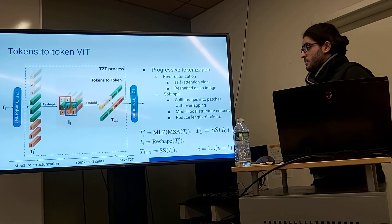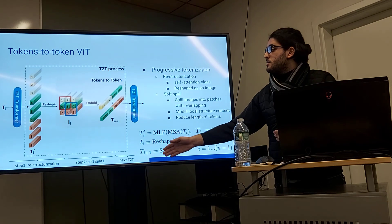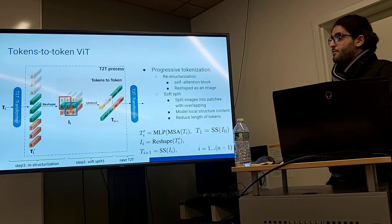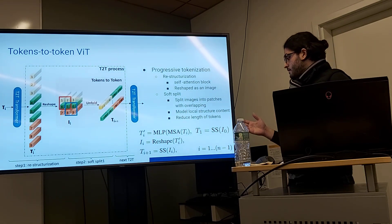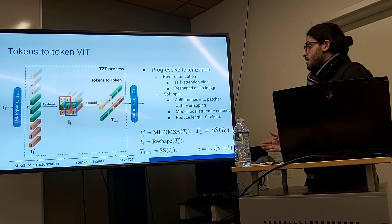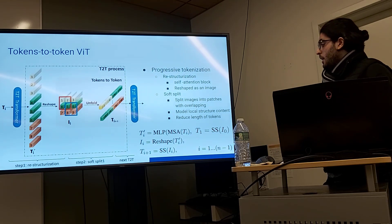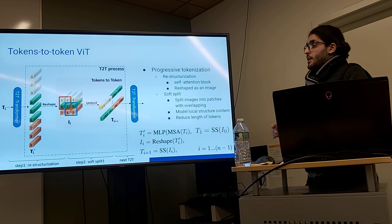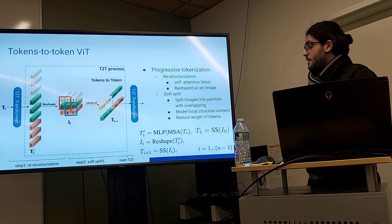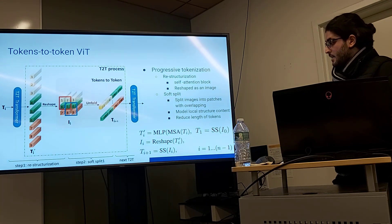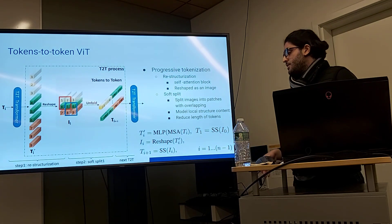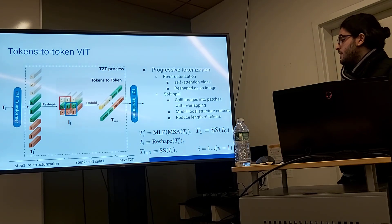This reduces the length of the tokens while increasing the number of channels for each patch. As an initial condition, we start with T1 equal to the soft split of the original image, then unfold it and perform multi-head self-attention, then reshape it, and iteratively repeat this process — progressively tokenizing from the original image down to a final fixed token.